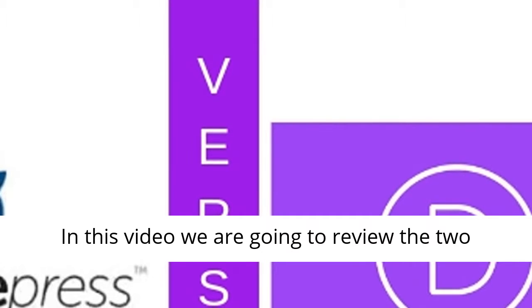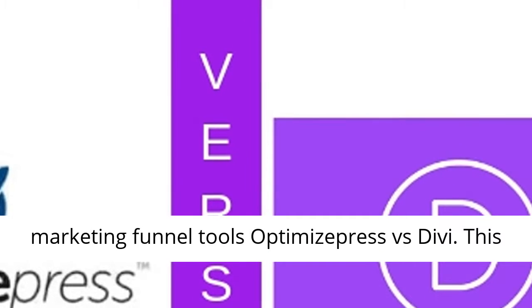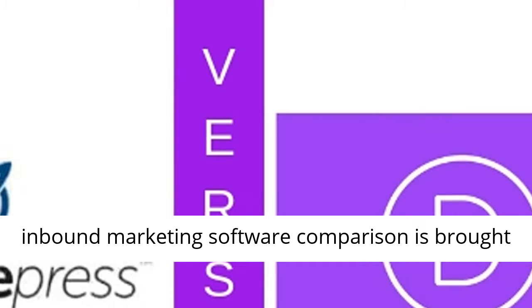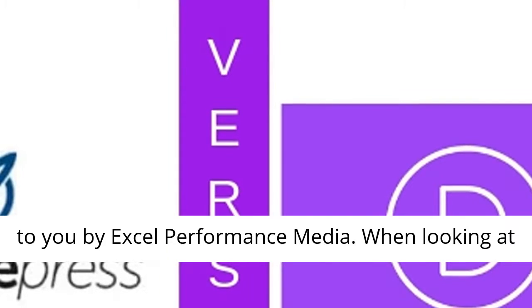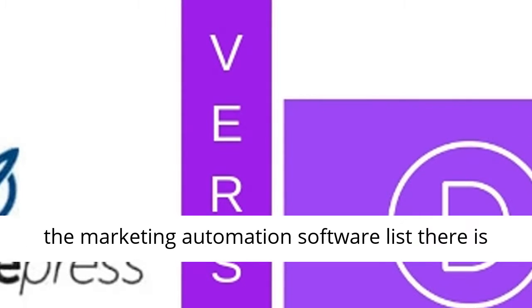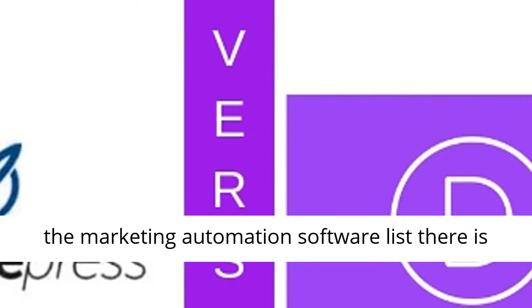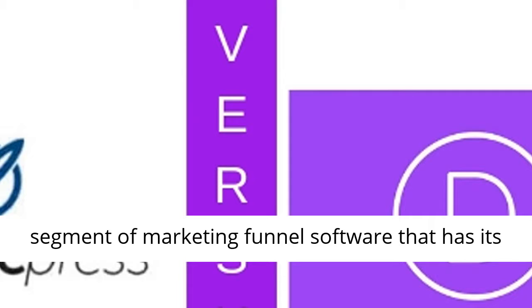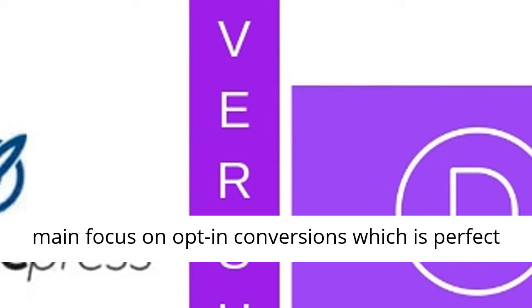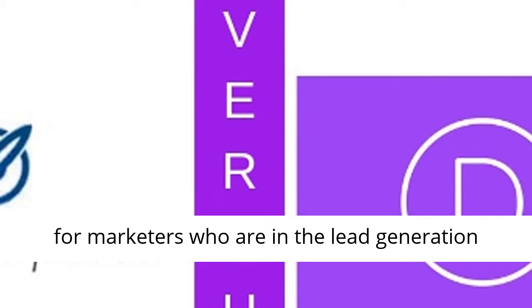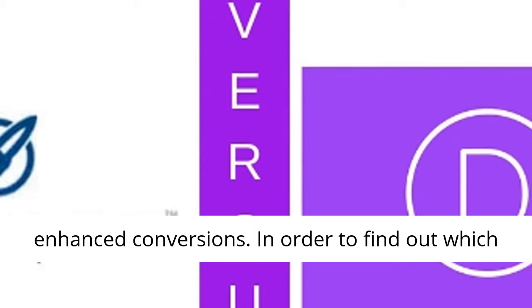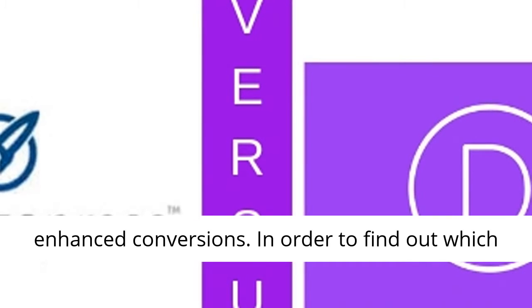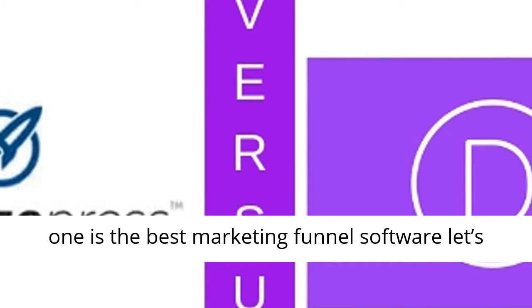In this video we are going to review the two marketing funnel tools OptimizePress vs Divi. This inbound marketing software comparison is brought to you by Excel Performance Media. When looking at the marketing automation software list, there is a segment of marketing funnel software that has its main focus on opt-in conversions, which is perfect for marketers who are in the lead generation business, constantly optimizing their campaigns for enhanced conversions. In order to find out which one is the best marketing funnel software, let's start this comparison with our OptimizePress review.